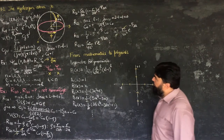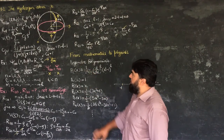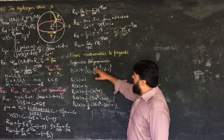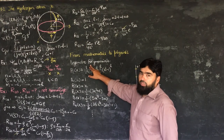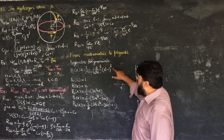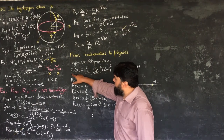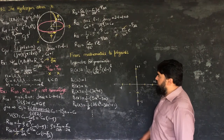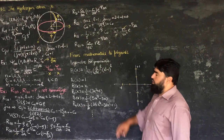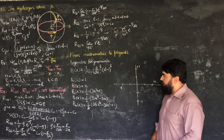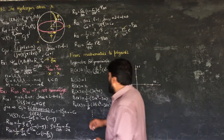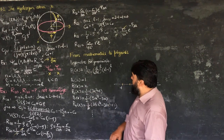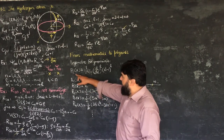We are now in a position to go from mathematics to physics, though we will need more mathematics to extract the physics. The first thing we discussed in the solution of the angular equation was the Legendre polynomials. The l-th Legendre polynomial is given as P_l(x) = (1/(2^l · l!)) · d^l/dx^l · (x² − 1)^l.